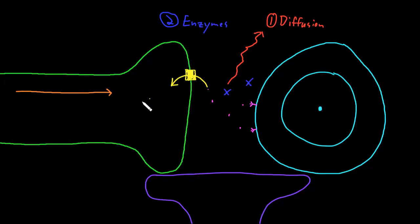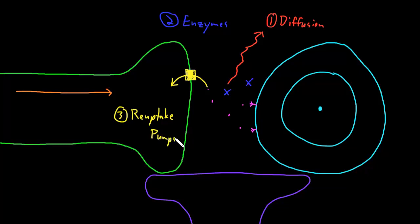These pumps are called reuptake pumps, because they take the neurotransmitter back into the axon terminal where it came from in the first place, and by doing so they remove the neurotransmitter from the synaptic cleft.